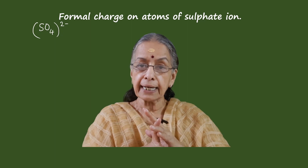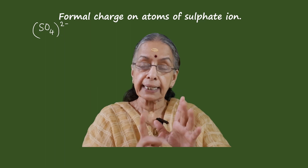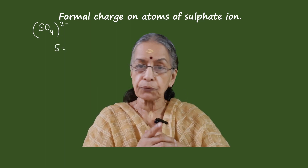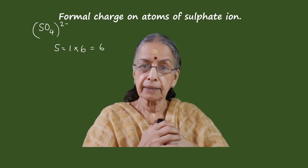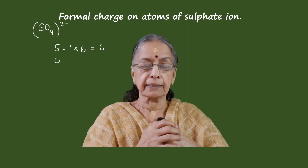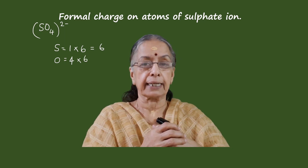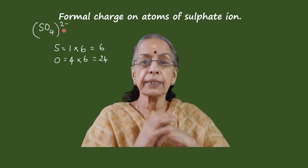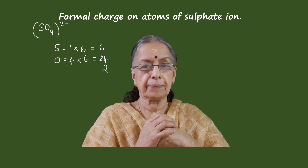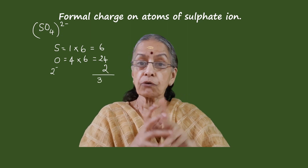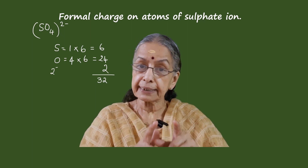It has an extra charge of two negative. The valence electrons in sulfur equal six. For oxygen, there are four oxygen atoms, and for each oxygen atom there are six valence electrons, so that gives 24 electrons. The ion has two negative charges, so we add two more electrons. The total comes to 32. When we finish drawing the electron dot diagram of sulfate ion, we have to show 32 electrons.